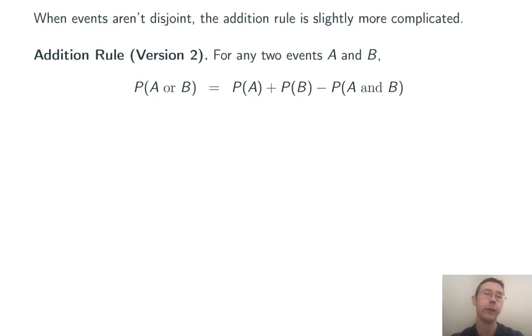When two events are not disjoint, the addition rule gets slightly more complicated. So here's the addition rule in all its glory. For any two events, A and B, so not necessarily mutually distinct, the probability of A or B is the probability of A plus the probability of B minus the probability of A and B.